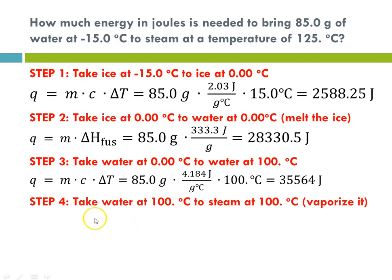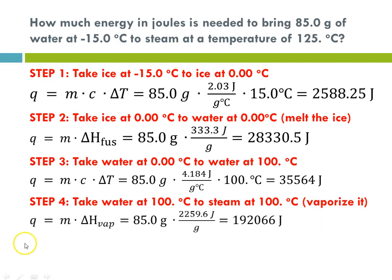Step 4: we've reached 100 degrees C, so we turn water at 100 to steam at 100 — vaporizing it. We're at the phase change, so Q equals M times the delta H of vaporization. Mass is still 85 grams, and our delta H of vaporization is 2259.6 joules per gram, which works out to 192,066 joules.